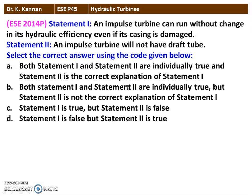The next question from the 2014 question paper — there are two statements. Statement 1: an impulse turbine can run without change in its hydraulic efficiency even if its casing is damaged. Statement 2: an impulse turbine will not have a draft tube. Both statements are correct and true, but statement 2 is not the correct explanation for statement 1.